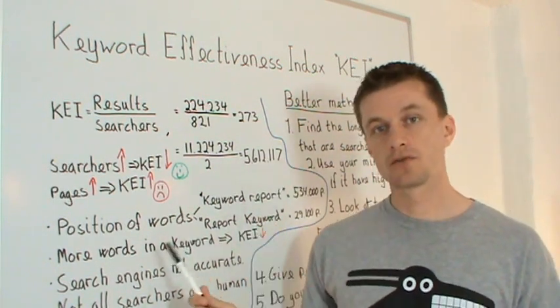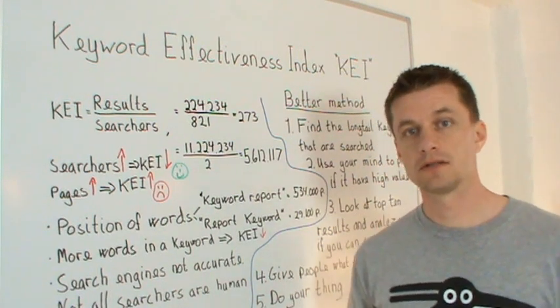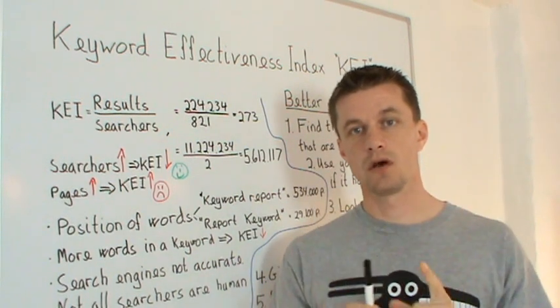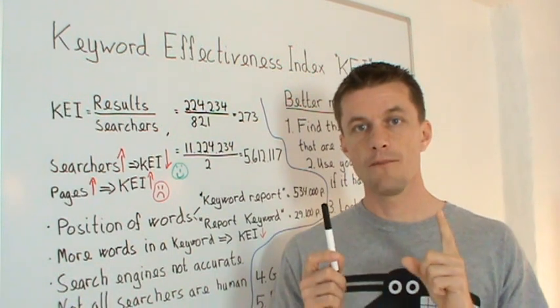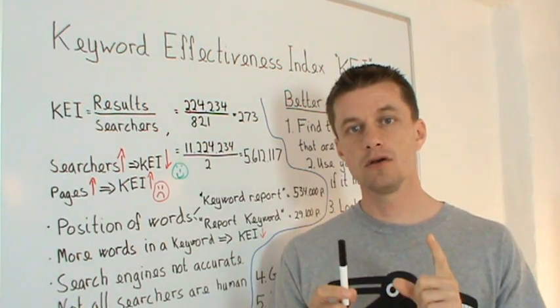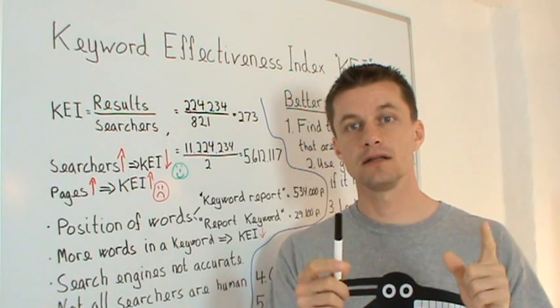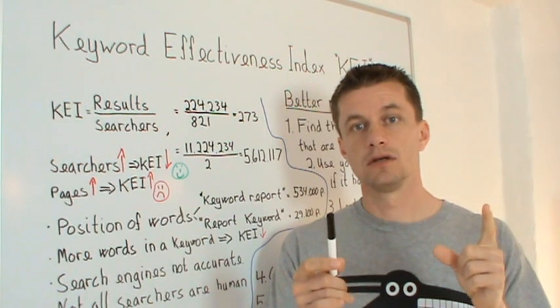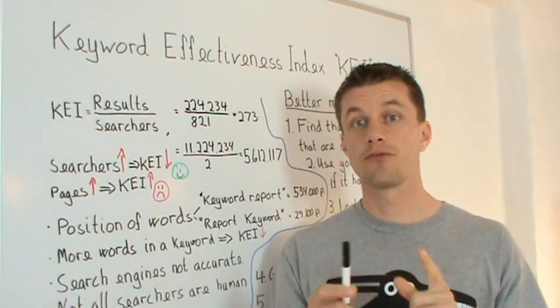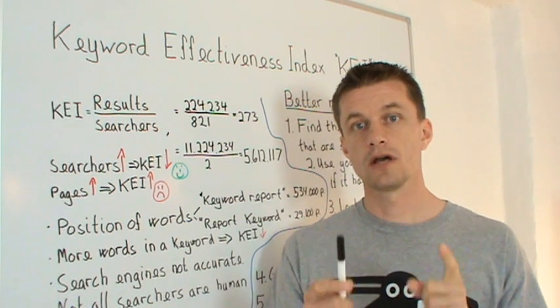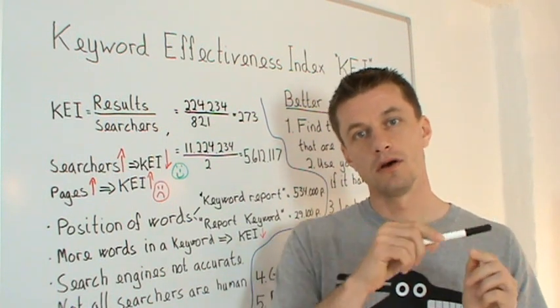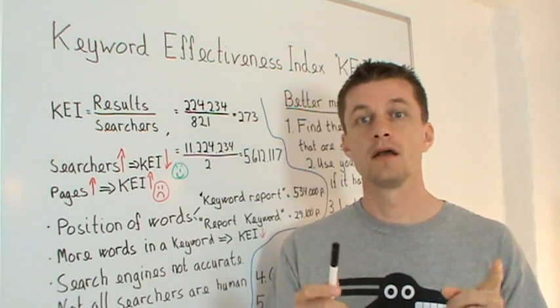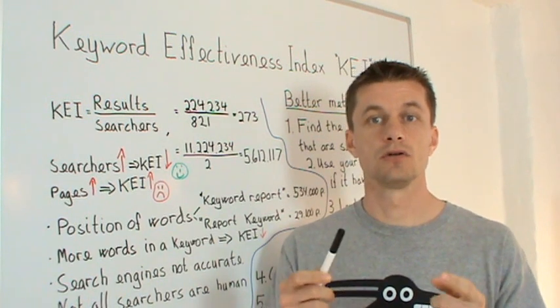Then you have to look at the number of words in a keyword. Let's say we have two keywords that have the same KEI. One has six words and the other one has three words. Many times the likelihood of finding all six words by accident in something that is not about this subject or answering these questions is smaller than just finding three of the words, the combinations. So therefore longer keywords have a tendency of having a lower KEI even though the competition might be the same.